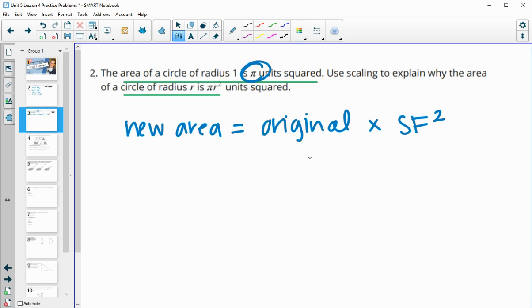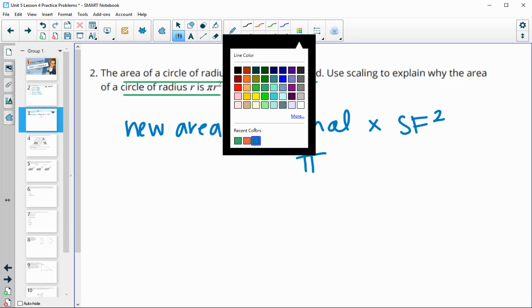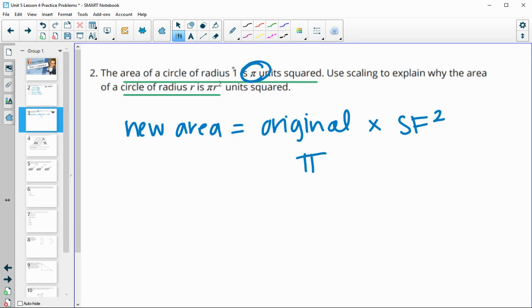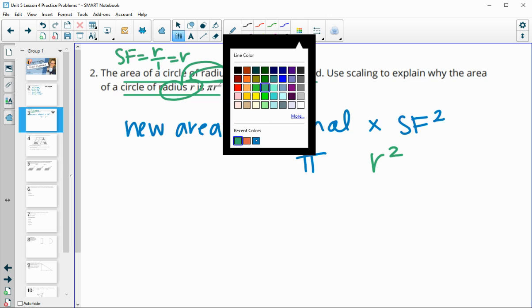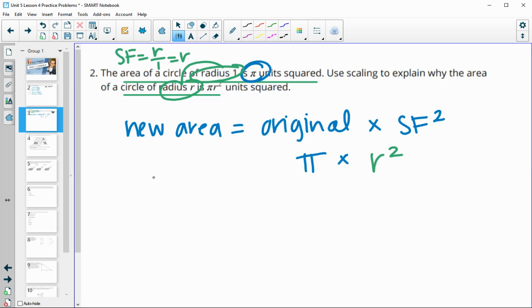our original area is pi, and then our scale factor, since we went from a radius of one to a radius of r, our scale factor is going to be the new dimension divided by the original, so our scale factor is r. So we're going to be multiplying by r squared, and so then we can see that our new area is going to equal pi times r squared.